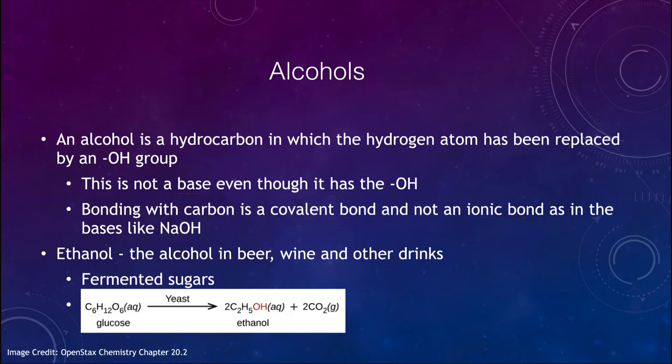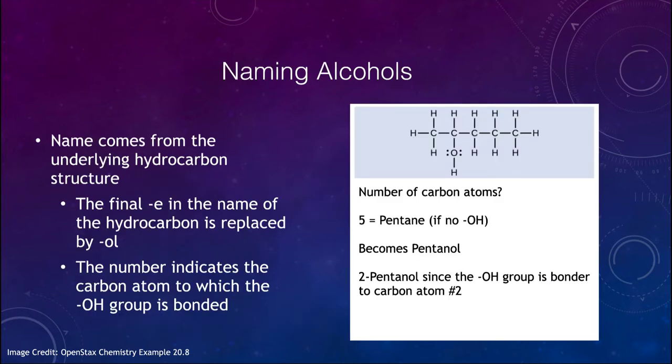Now we can name these alcohols just as we named other organic compounds that we looked at previously. The naming is from that underlying structure of the hydrocarbon. So we look here at this example. How many carbon atoms do we have in our chain here? Well, there are five carbon atoms present and that is going to be a pentane. So if we had no OH here, if this was just the hydrogen atom, then we would have pentane and we would be done.